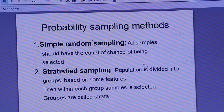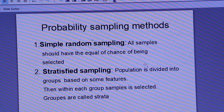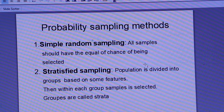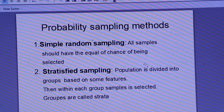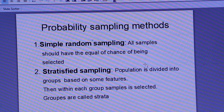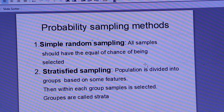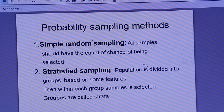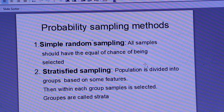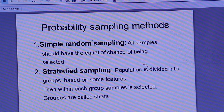The next one is stratified sampling. In stratified sampling, we divide the population based on some basic features. Each divided part of the population is called a stratum, and from each stratum, samples are selected.